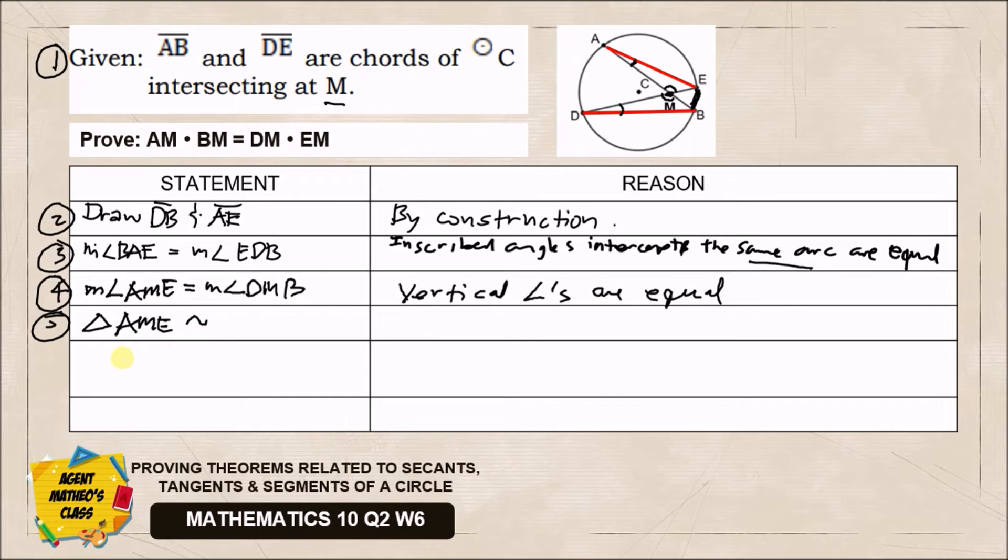So in number five, triangle AME is actually similar to triangle DMB. What would be the reason? We had similarity theorems in grade 9. We can say that because we found two pairs of congruent angles - one tick mark and two tick marks - by the Angle-Angle Similarity Theorem, the two triangles AME and DMB are similar.